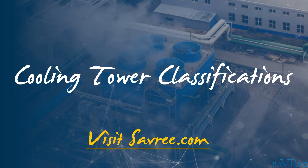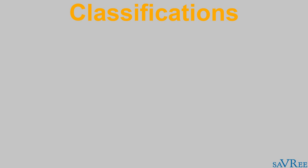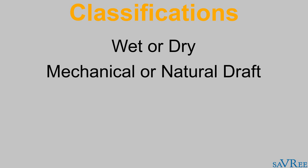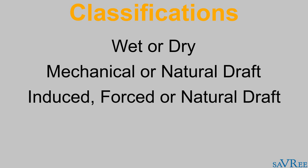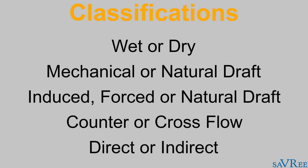Cooling tower classifications. Cooling towers can be classified based on a number of design characteristics. These are wet or dry, mechanical draft or natural draft, induced draft, forced draft or natural draft, counter flow or cross flow, direct or indirect, also known as open or closed circuit. Let's have a look at each of these classifications in more detail.